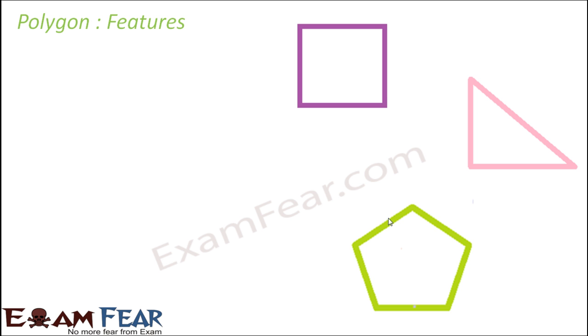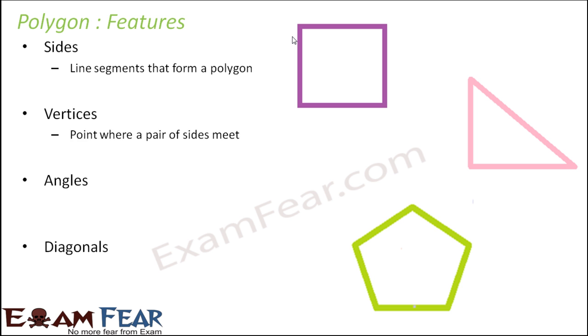Now, when we talk about features in a polygon, here we have sides, vertices, angles and diagonals. So sides, nothing but the line segments which form this polygon. So the line segments that form a polygon are the sides.